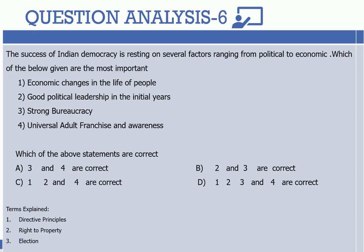The success of Indian democracy is resting on several factors ranging from political to economic. Which of the below given are the most important? We are given four factors: first, economic changes in the life of the people; second, good political leadership in the initial years; third, strong bureaucracy; fourth, universal adult franchise and awareness. The answer options are 3 and 4, 2 and 3, 1 to 4, or 1, 2 and 4.